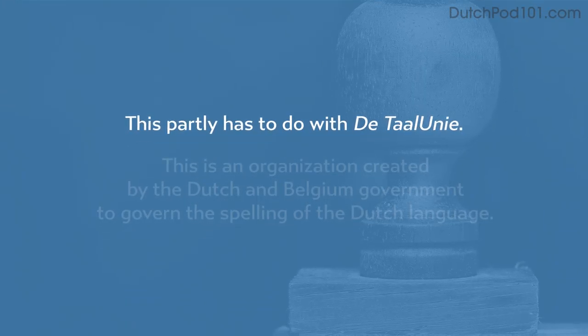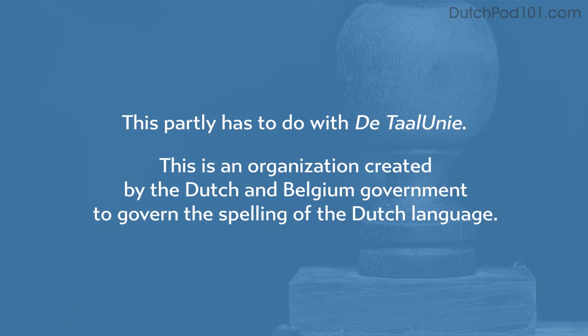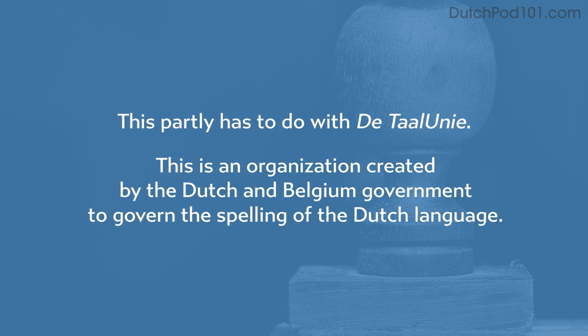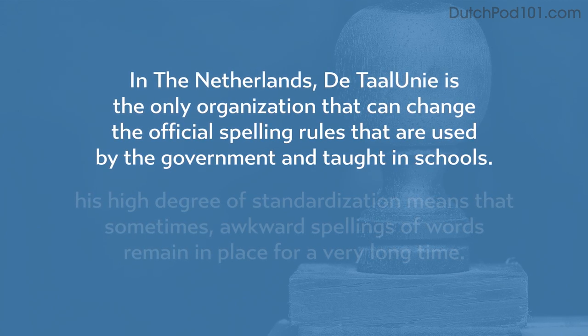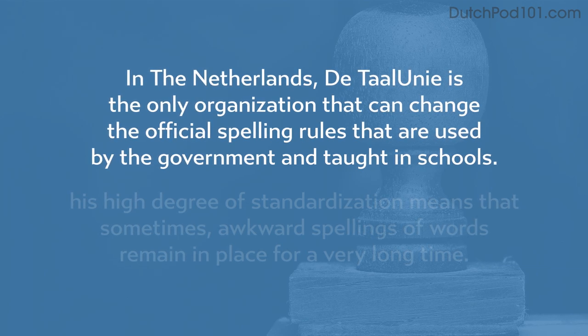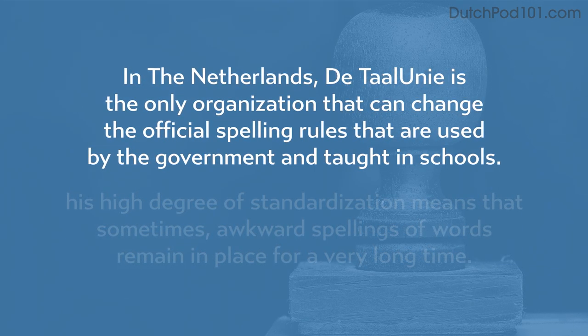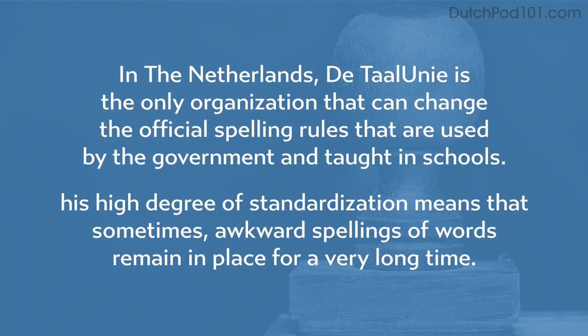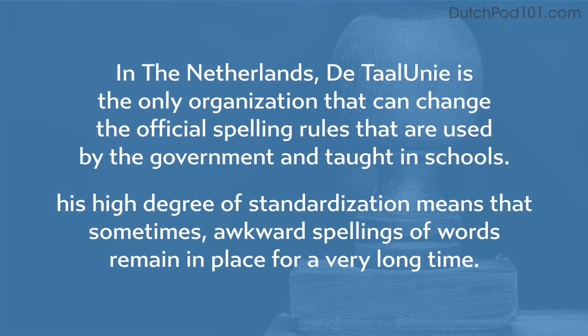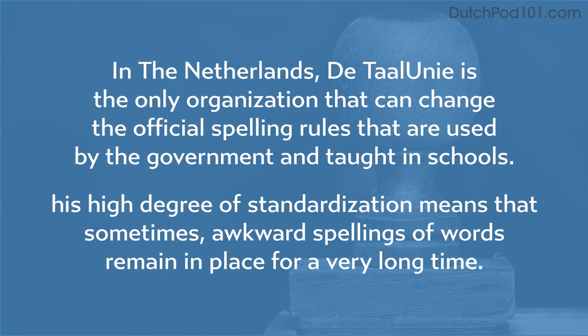Does that mean that spelling rules in Dutch are way easier? Sadly it does not. It is sometimes joked that Dutch spelling rules have an exception to the exception of the exception of the exception of the main rule. This partly has to do with the Taal-Unie — an organization created by the Dutch and Belgian government to govern the spelling of the Dutch language. This high degree of standardization means that sometimes awkward spelling of words remains in place for a very long time.